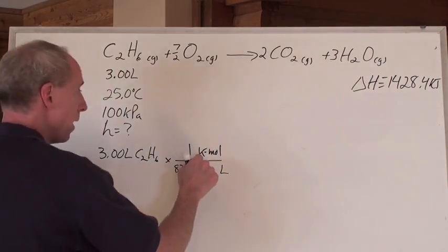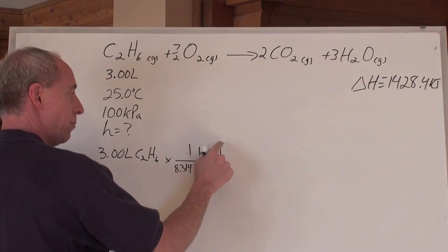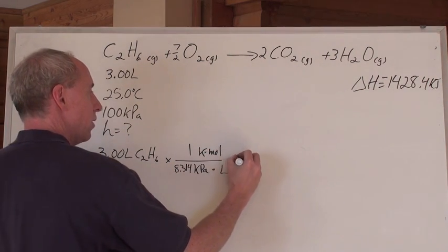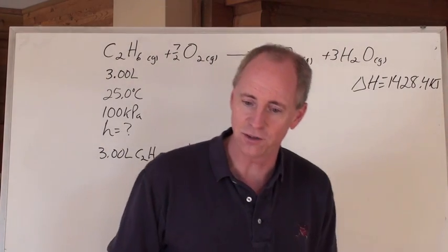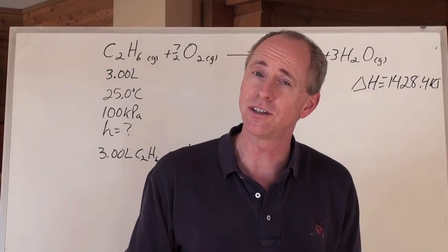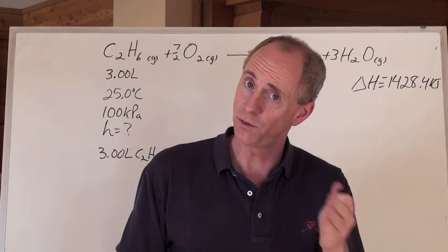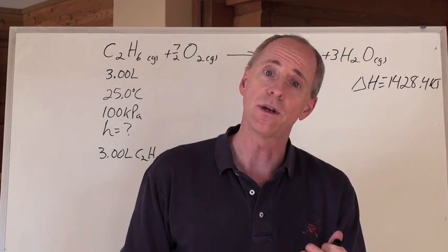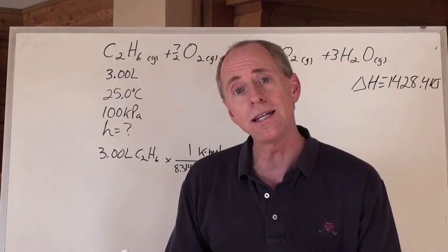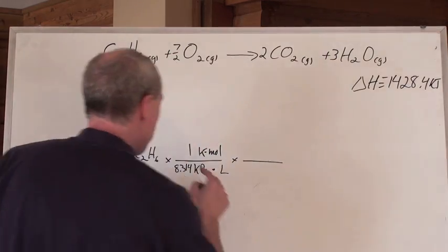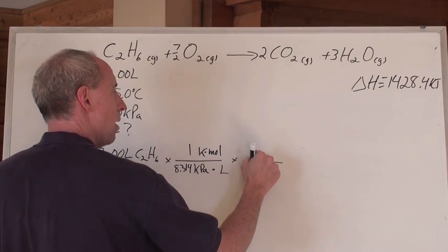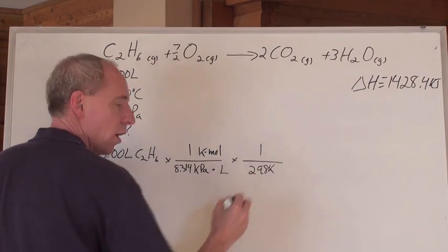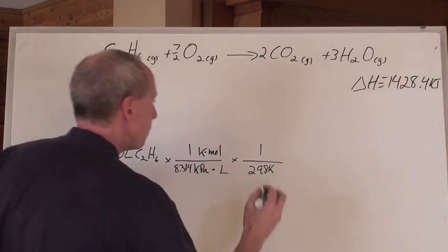But now, you know what? I don't want Kelvins in the end. I want to be left with moles. I got to get rid of the Kelvins. Where's the Kelvins? Here. No, that's not Kelvins. That's degrees Celsius. How do you turn degrees Celsius into Kelvins? Add 273. Remember that? So 273 plus 25 is 298K. Where do I want that 298K? Down here. 298K. What do I want up top? Ah, just put one. It's okay.